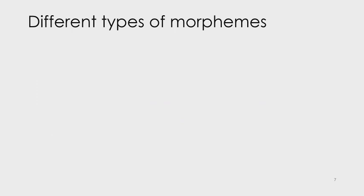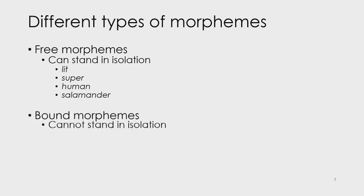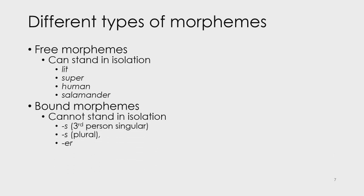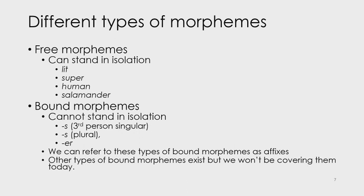There are different types of morphemes. Free morphemes can stand in isolation, and examples of free morphemes you've already encountered include lit, super, human, and salamander. On the contrary, bound morphemes cannot stand in isolation. Examples of bound morphemes are the third person singular -s, the plural -s, and -er. We can refer to these types of bound morphemes as being affixes. Other types of bound morphemes do exist, but we aren't concerned with those today.